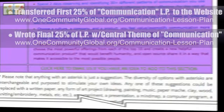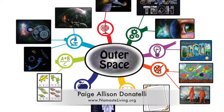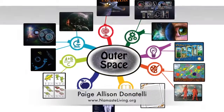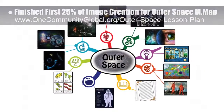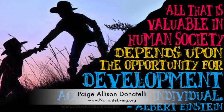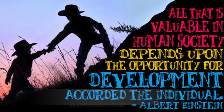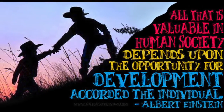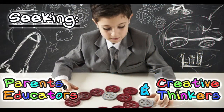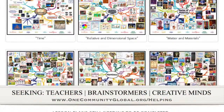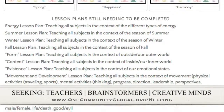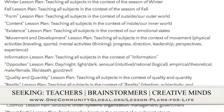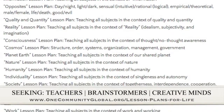Paige Allison Donatelli, graphic designer and owner-operator of Namaste Living in a Material World, finished the first 25 percent of the image creation for the outer space lesson plan mind map, which you can see here. Paige also helped create a new image for the movement and development lesson plan, featured this week across our social media channels. If you'd like to help with this education program, we are seeking people to finish these lesson plans through our open source and free shared education program for all ages and educational levels.